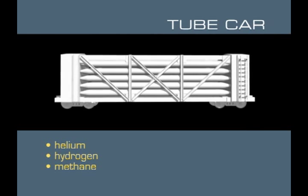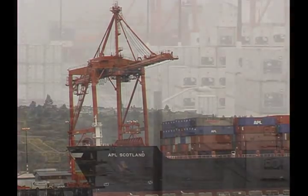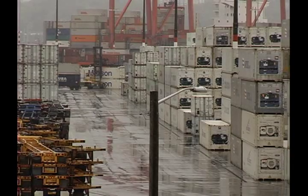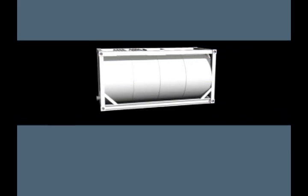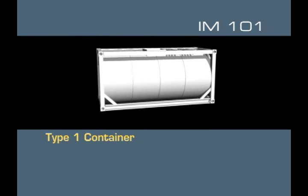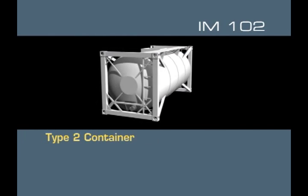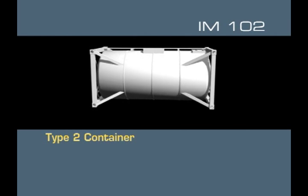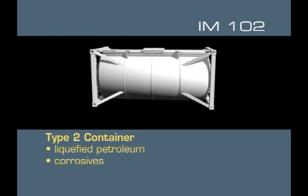The next type of container to quickly identify is the intermodal tank, which can be transferred between trains, ships, or trucks. Intermodal tanks use the acronym IM for intermodal, followed by an identification number. These include the IM-101 or Type 1 container that usually carries non-flammable liquids and mild corrosives, and the IM-102 or Type 2 container that looks very similar to the Type 1 but contains flammable materials such as liquefied petroleum and corrosives.